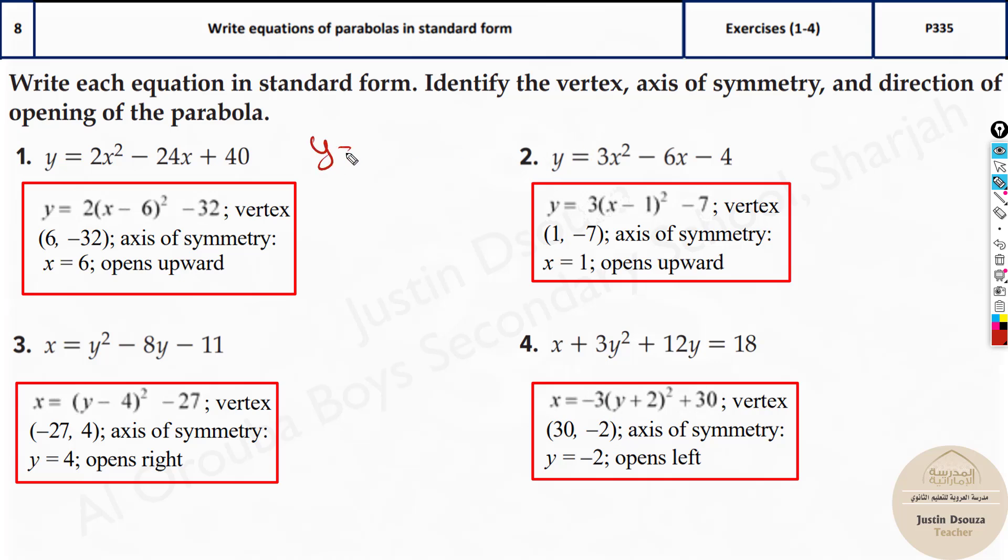Now, one thing, if it is y is equal to x squared and so on, if it is plus, it opens upwards, minus it opens downwards. But what if it is x is equal to y squared and so on. So, if it is plus, it opens to the right. If it's minus, it opens to the left. That's the only thing.